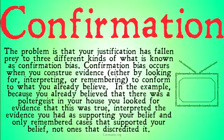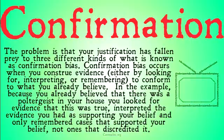The problem is that your justification has fallen prey to three different kinds of what is known as confirmation bias. Confirmation bias occurs when you construe evidence — either by looking for, interpreting, or remembering it — to conform to what you already believe. In the example, because you already believed there was a poltergeist, you looked for evidence that this was true, interpreted the evidence as supporting your belief, and only remembered cases that supported your belief, not ones that discredited it.